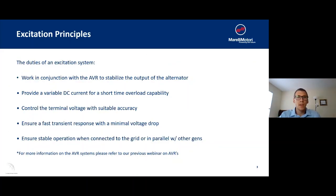Let's cover the main duties of the excitation system. The excitation system works in conjunction with the AVR to stabilize the output of the alternator. It provides a variable DC current for short time overload capability and controls the terminal voltage with suitable accuracy. This helps to ensure a fast transient response with minimal voltage drop and helps ensure stable operation when connected to the grid or in parallel with other generators. For more information on our AVR systems, please refer to one of our previous webinars that we cover, Morelli AVRs.